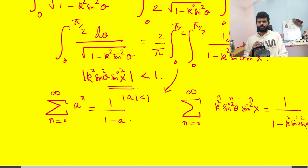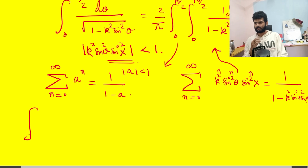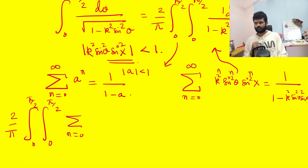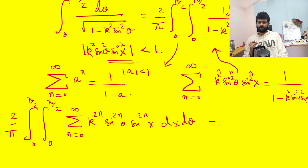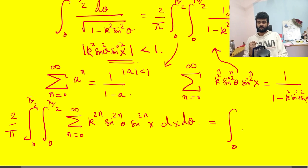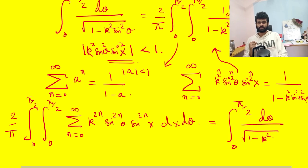Plugging this back into the double integral gives: (2/π) times the double integral from 0 to π/2 of Σ_{n=0}^∞ k^{2n} sin^{2n}θ · sin^{2n}x dx dθ, which equals our target integral of dθ over √(1 − k² sin²θ).